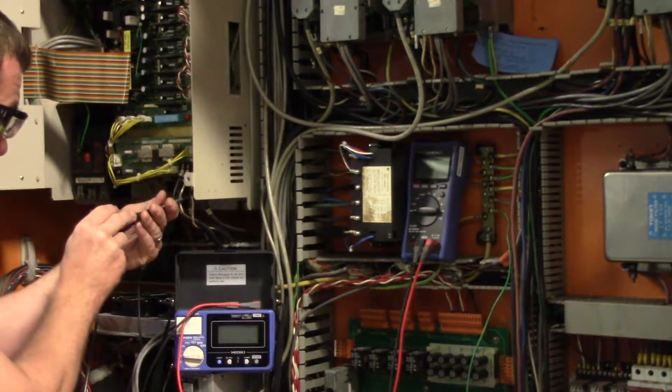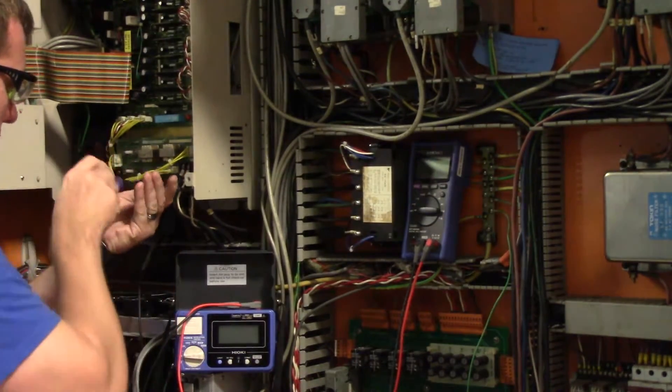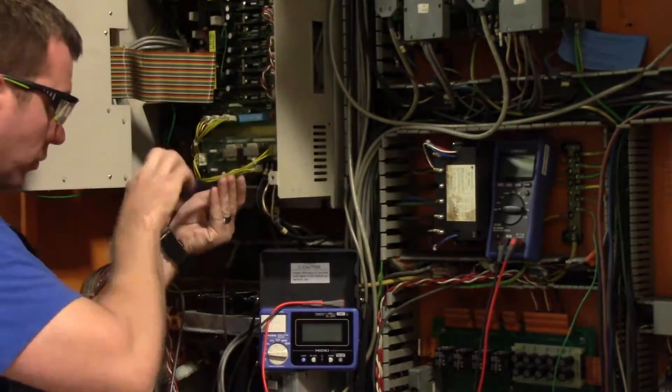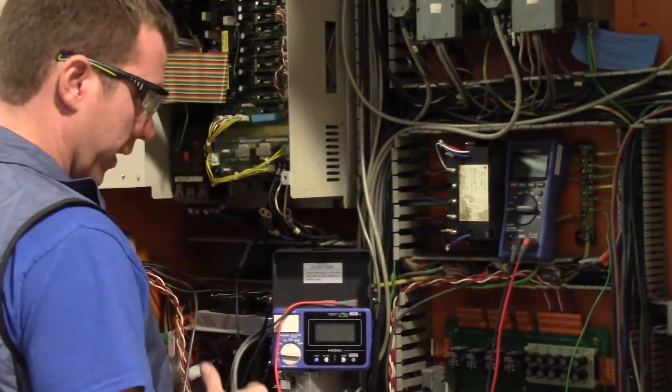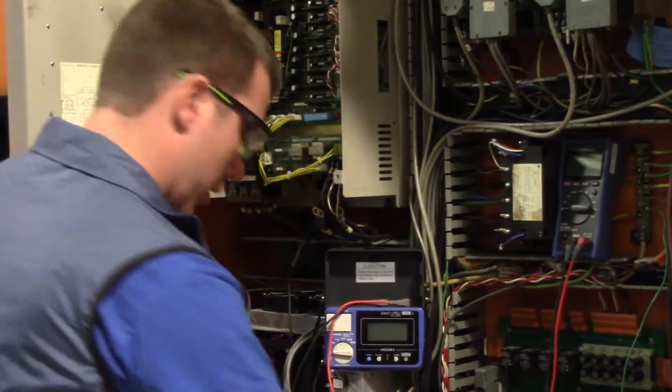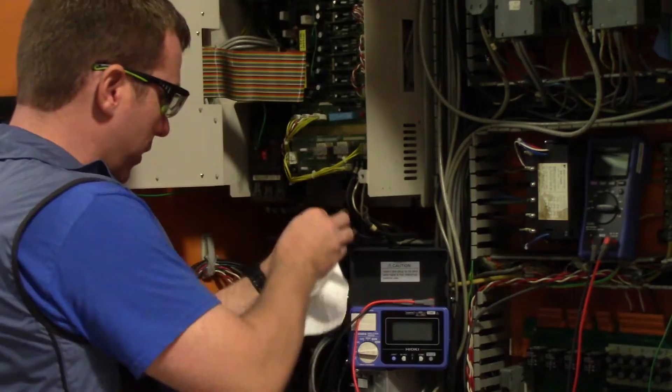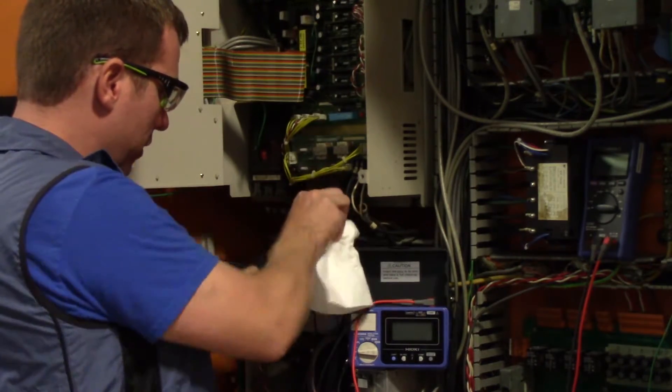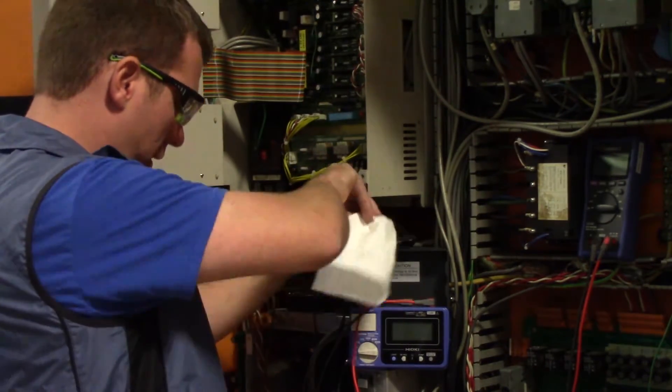So let's go ahead and disconnect U, V, and W. Okay, so now that U, V, and W is disconnected, you want to take some type of solvent and make sure that the leads are nice and clean.